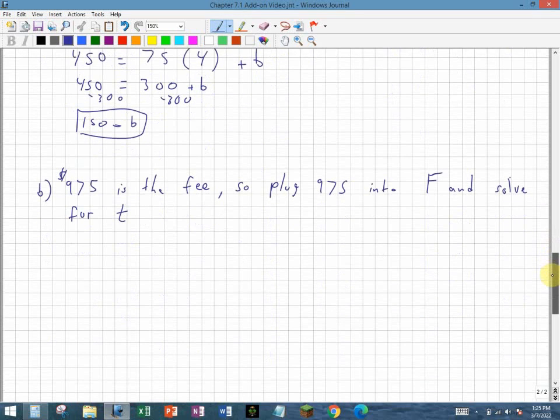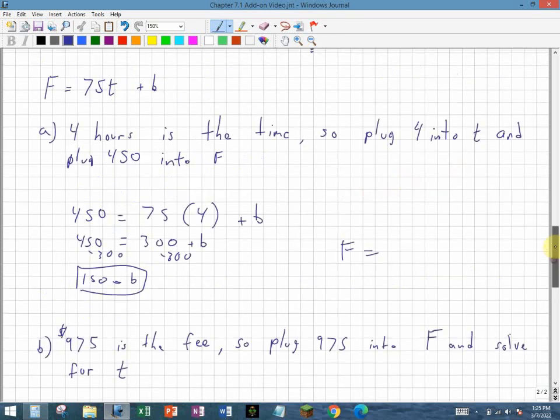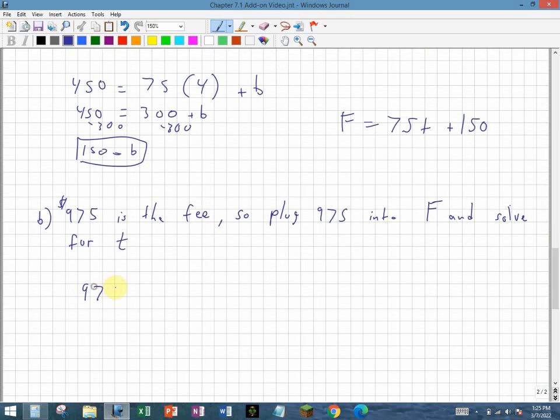For the last question, I'm not going to solve this one for you, but this will give you an equation for the first part. It will give you the equation f is equal to 75t plus 150. And then when it asks you for part b, where $975 is the fee, we plug $975 into f, and we have to solve for that missing value for t. So I'll leave this one up to you.